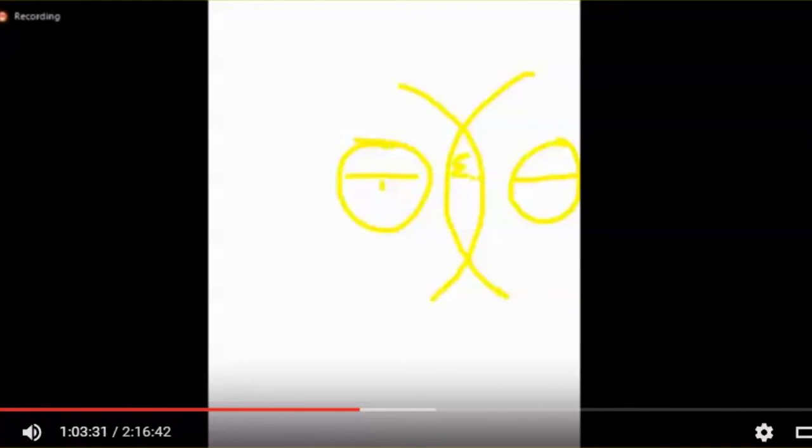Right here is your vesica piscis. This is how you interlock your fields. This point and this point is where they're locked in.